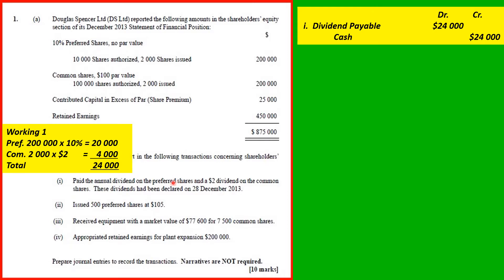For the common shares, we have 2,000 issued at $2 a share dividend, giving us $4,000 in dividend. That gives us a total of $24,000. When we do the journal entry, we can do it in total. The journal entry would be: debit dividend payable $24,000, credit cash $24,000. You must have the word 'payable' here to get the mark.